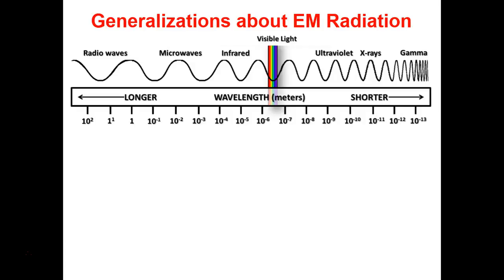Going higher in energy, we have ultraviolet light — with ultraviolet, you'd be worried about sunburn and skin damage. Then X-rays, which go right through your skin. If exposed to too many X-rays, you'd develop cancer, but typically we're only exposed for the briefest moment during medical imaging. And then gamma radiation is the super intense, really bad-for-you kind — exposure to too much gamma radiation will almost surely cause cancer. So avoid gamma rays.